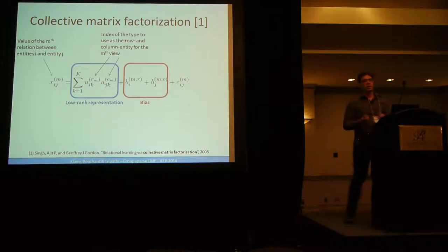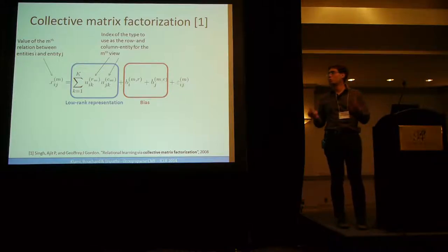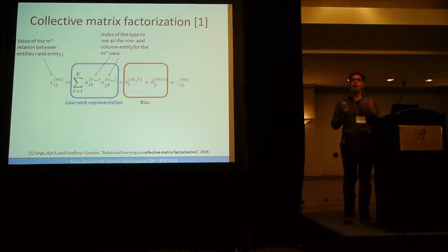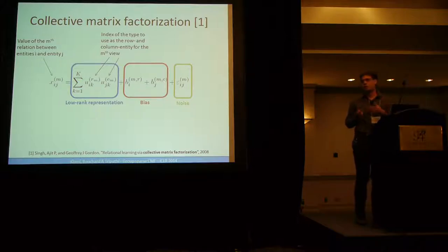What's very important in collective matrix factorization is to use the bias term. I don't know if some of you have used collaborative filtering applications without the bias term. It's really important to take this into account. And we can consider arbitrary noise. Not only Gaussian noise, you can use heavy-tailed noise or logistic observation for binary data.